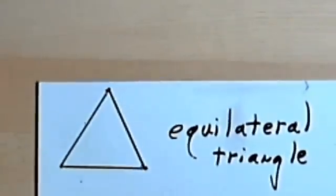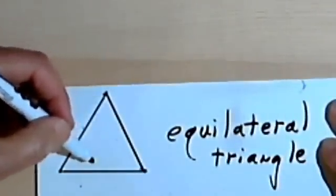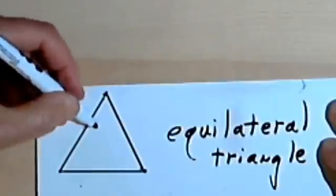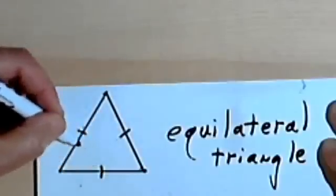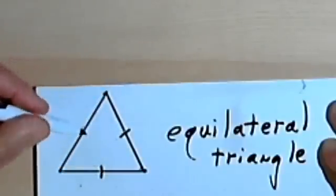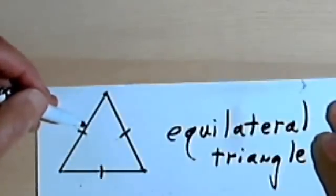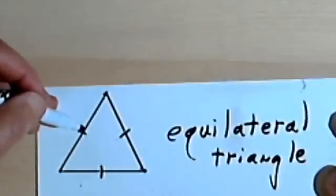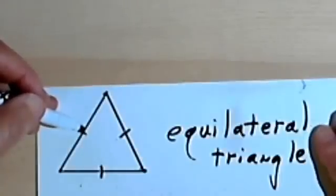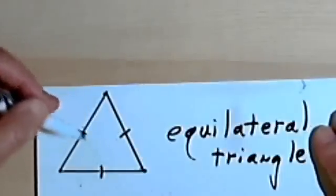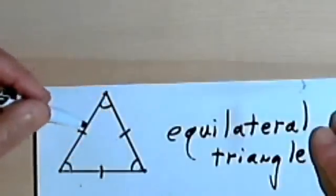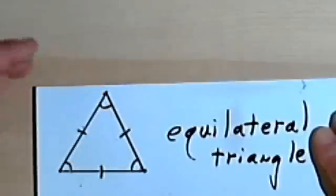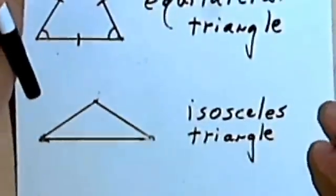More ways to classify them. In this triangle, all three sides are the same length. One of the ways to show they're the same length is by drawing a single line through all the sides that are the same. So we've got three sides that are the same, and this is called an equilateral triangle. Equilateral means equal sides. If we have an equilateral triangle, then we're also going to have three equal angles — three equal sides and three equal angles.